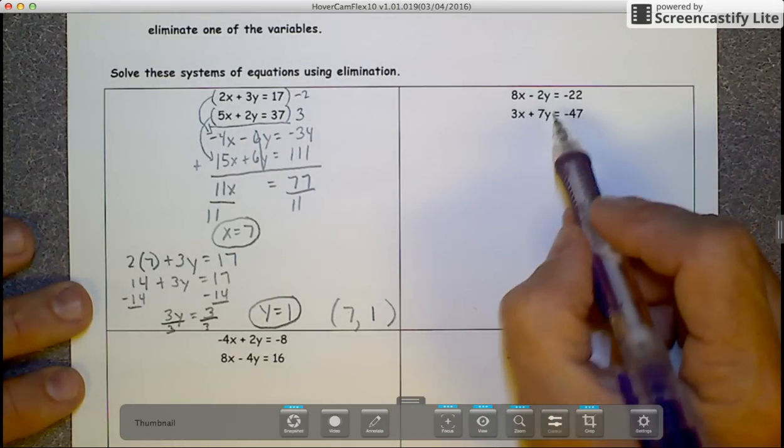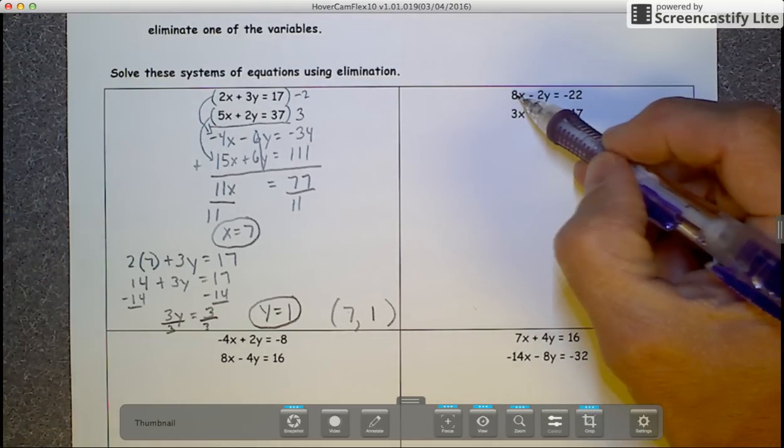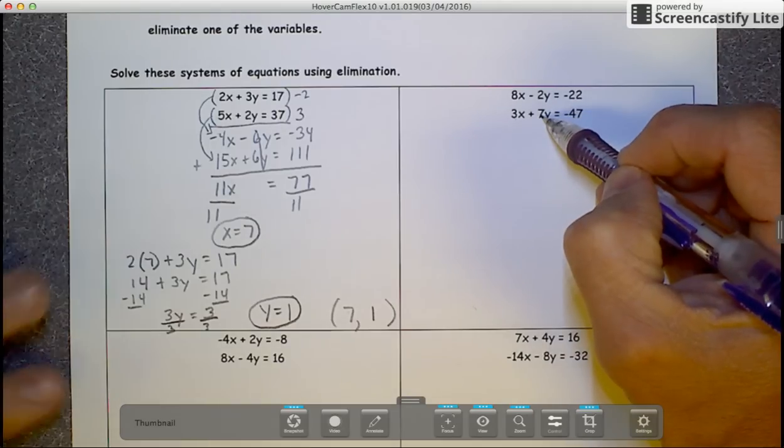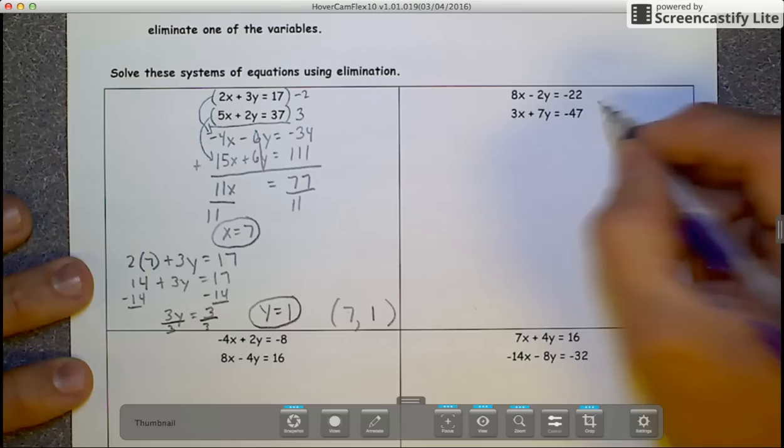What I want you to do is solve this one. As we look at it, we have a positive 8 and a positive 3, a negative 2 and a positive 7. So we're going to have to multiply or modify both equations in that one.